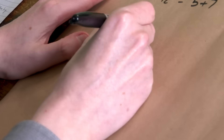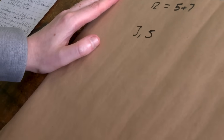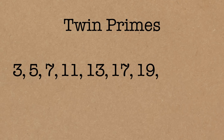The twin primes are 3 and 5, then 5 and 7, then 11 and 13, then 17 and 19, then 29 and 31, and so on. We think there's infinitely many of those.